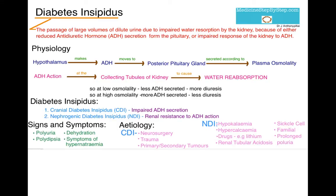Nephrogenic diabetes insipidus can be because of the following causes: hypokalemia, hypercalcemia, drugs, renal tubular acidosis, sickle cell disease, it can be familial, or because of prolonged polyuria.